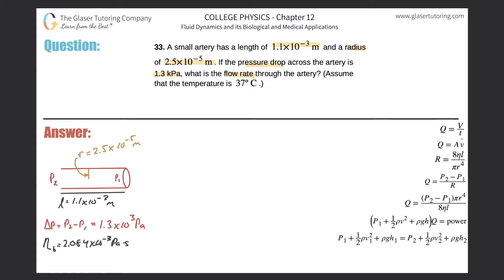There's one other thing we need, and that's the viscosity of blood at body temperature, 37 degrees Celsius.